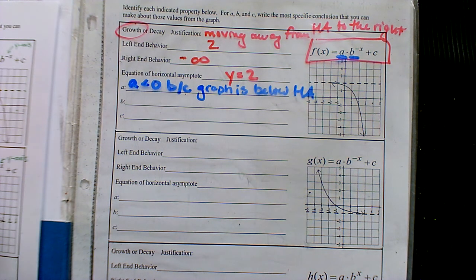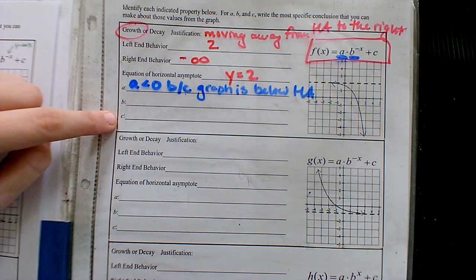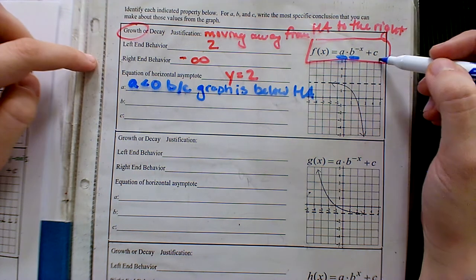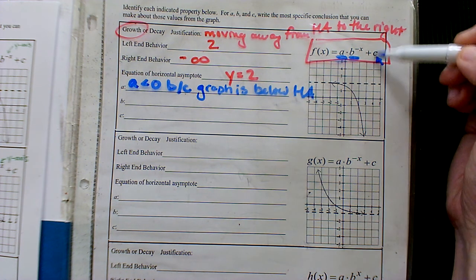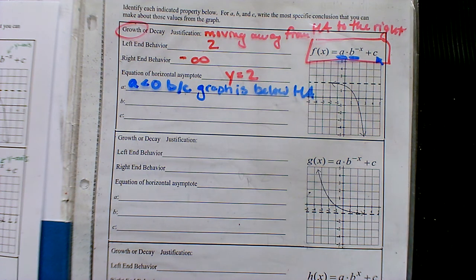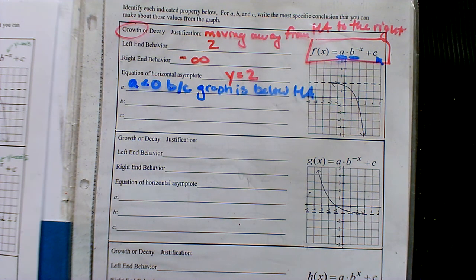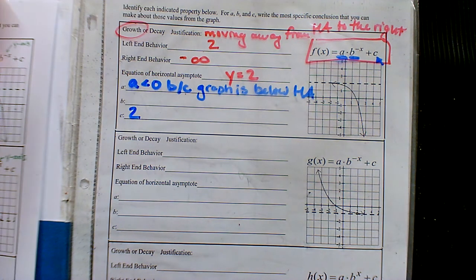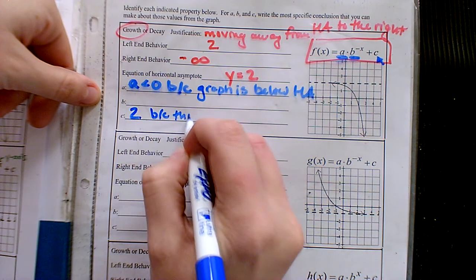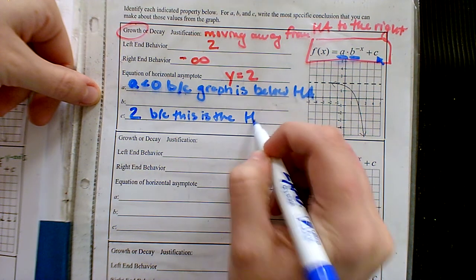We're going to skip b for a moment and come back to it. Can we conclude something about c, the constant term on the end? In a previous section we've seen this as the letter d, but here it's the letter c — still representing the constant term. That constant term is the horizontal asymptote. So c equals two because the horizontal asymptote is at y equals two.